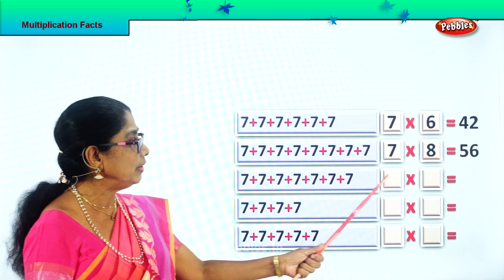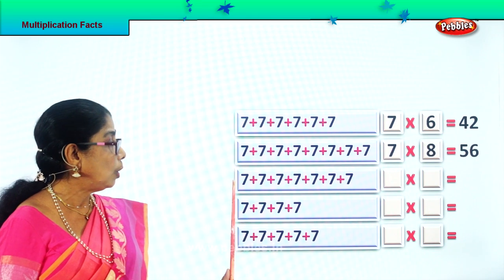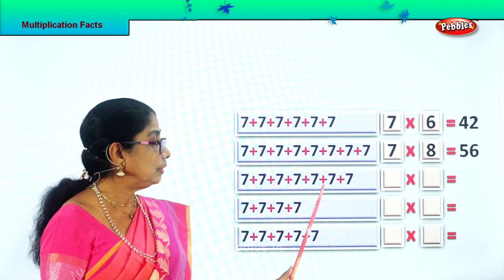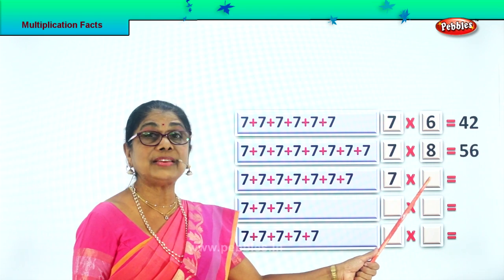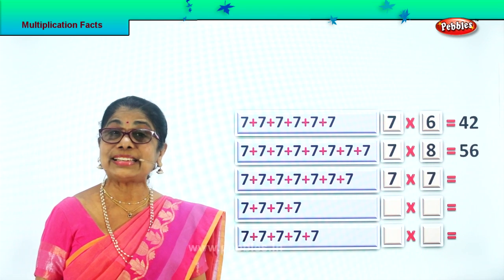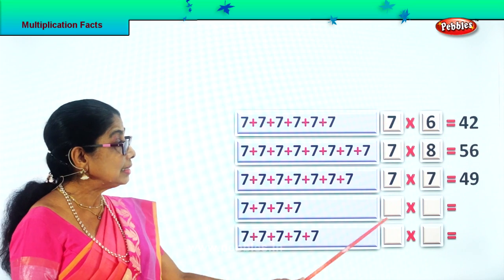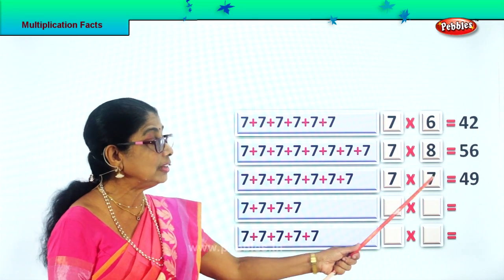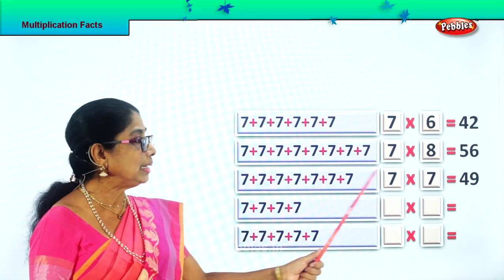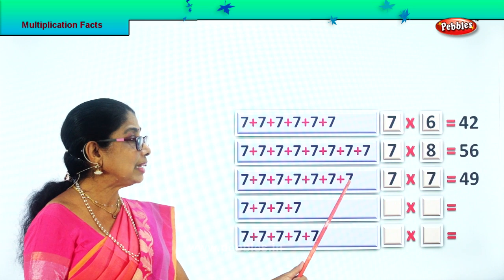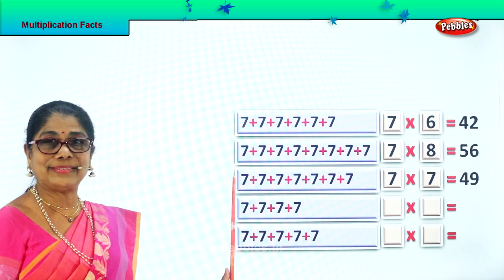Next we have 7. How many times? Let's see: 1, 2, 3, 4, 5, 6, 7. 7 times. What is 7 sevens are? Good. 7 sevens are 49. 7, how many times? 7 times: 1, 2, 3, 4, 5, 6, 7.